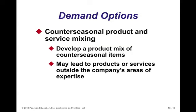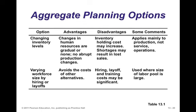On the demand side you also have counter-seasonal product and service mixing. Just before winter you make snowblowers; just before summer you shift capacity to make grass mowers. That way you use your capacity effectively without idle capacity in one season and insufficient capacity in another. Developing a product mix of counter-seasonal items prevents those imbalances, though it may lead to products outside the company's area of expertise. In the case of lawnmowers and snowblowers, the competencies are similar enough to coexist within a single company.